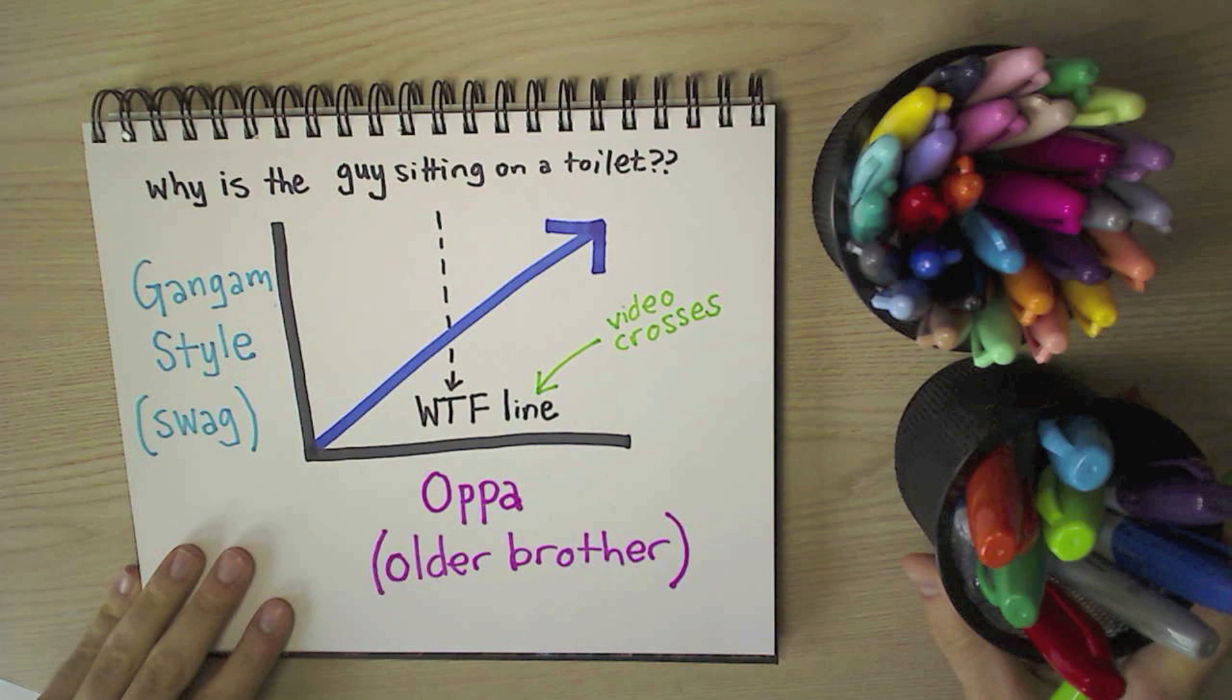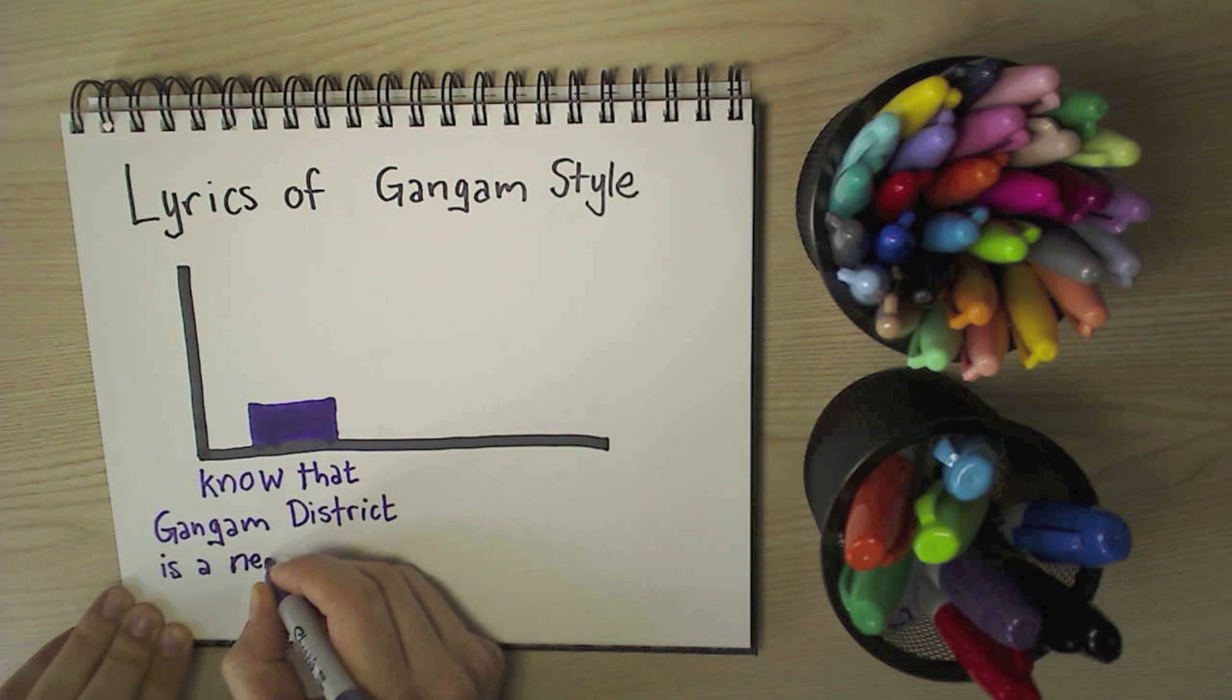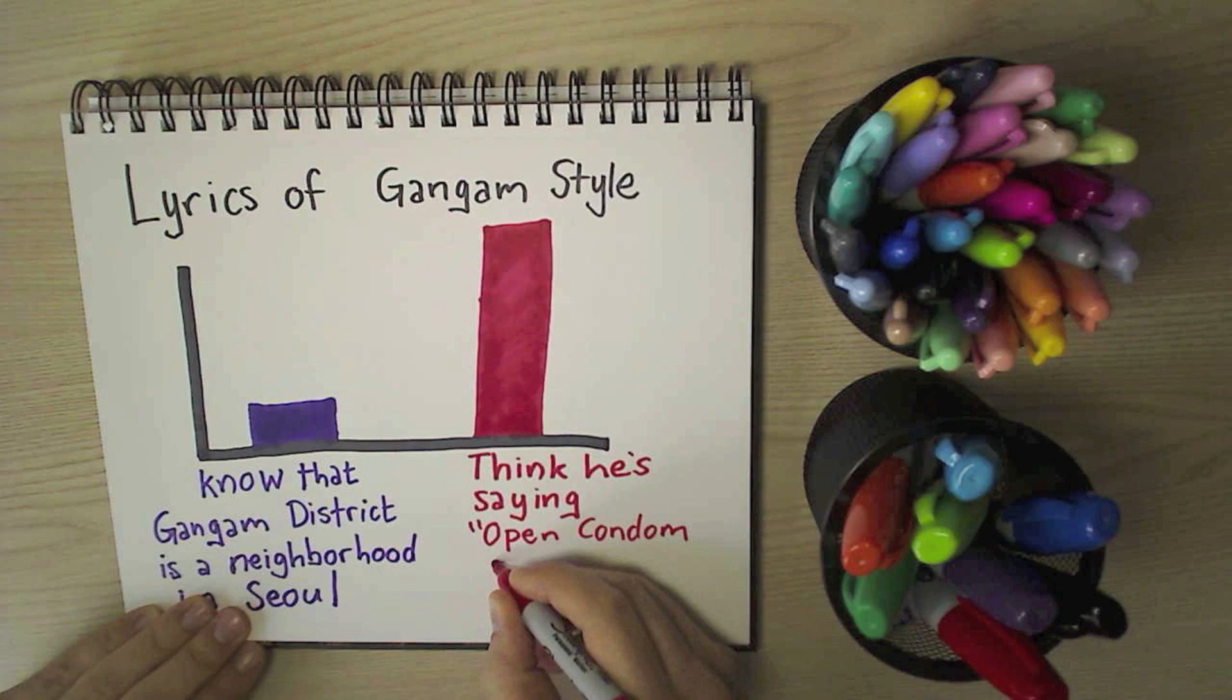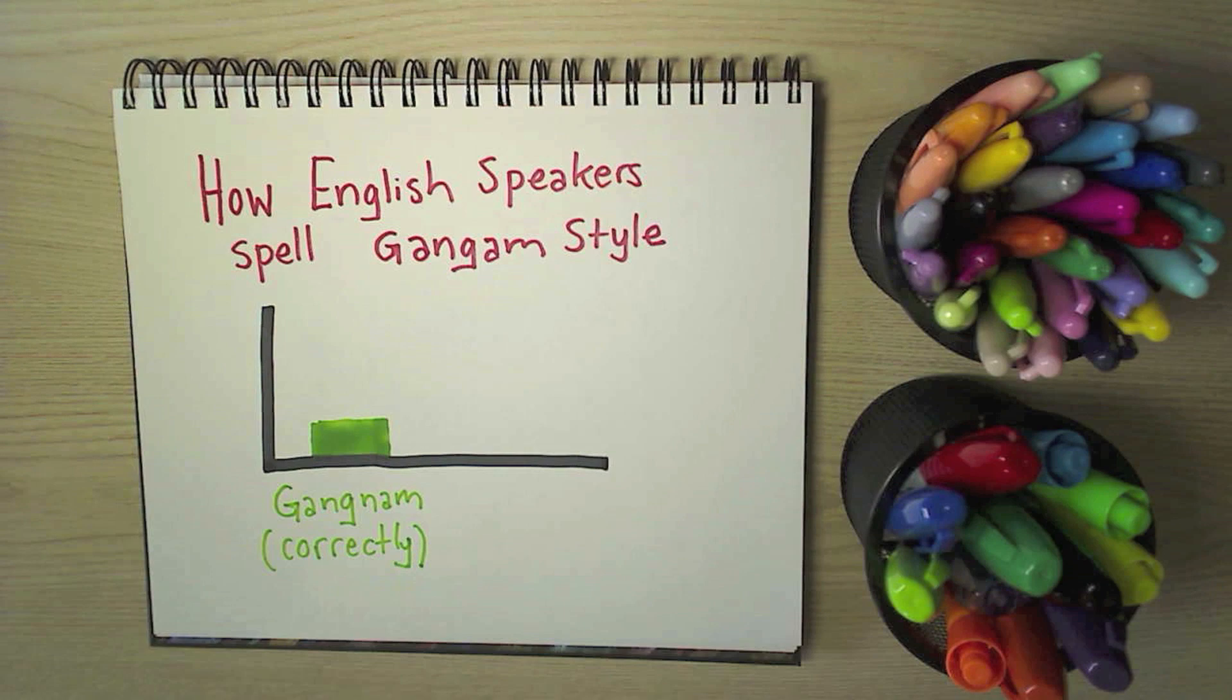I think if you surveyed English speakers, only a small fraction would know that Gangnam Style is referring to the Gangnam District, which is an upscale neighborhood in Korea, and the vast majority would think he's saying 'Open Condom Style.' In fact, if you look at Google's search traffic, you will find that a staggering and embarrassing number of English speakers, including myself in this video, almost always drop the N and spell Gangnam incorrectly.